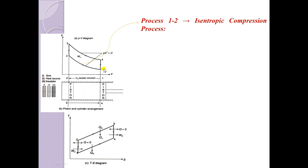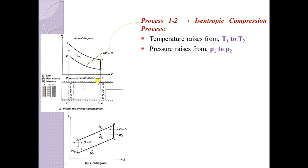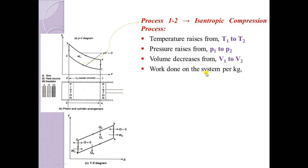The first process, from point 1 to point 2, is the isentropic compression process. The temperature rises from T1 to T2, as observed in the TS diagram. The pressure rises from P1 to P2 in the PV diagram because of the rising temperature. Due to compression, the piston moves from position 1 to position 2, and as a result, volume decreases from V1 to V2. Work done on the system per kg is written as (P1V1 − P2V2) / (γ − 1), where P1V1 is the initial and P2V2 is the final pressure and volume during process 1 to 2.